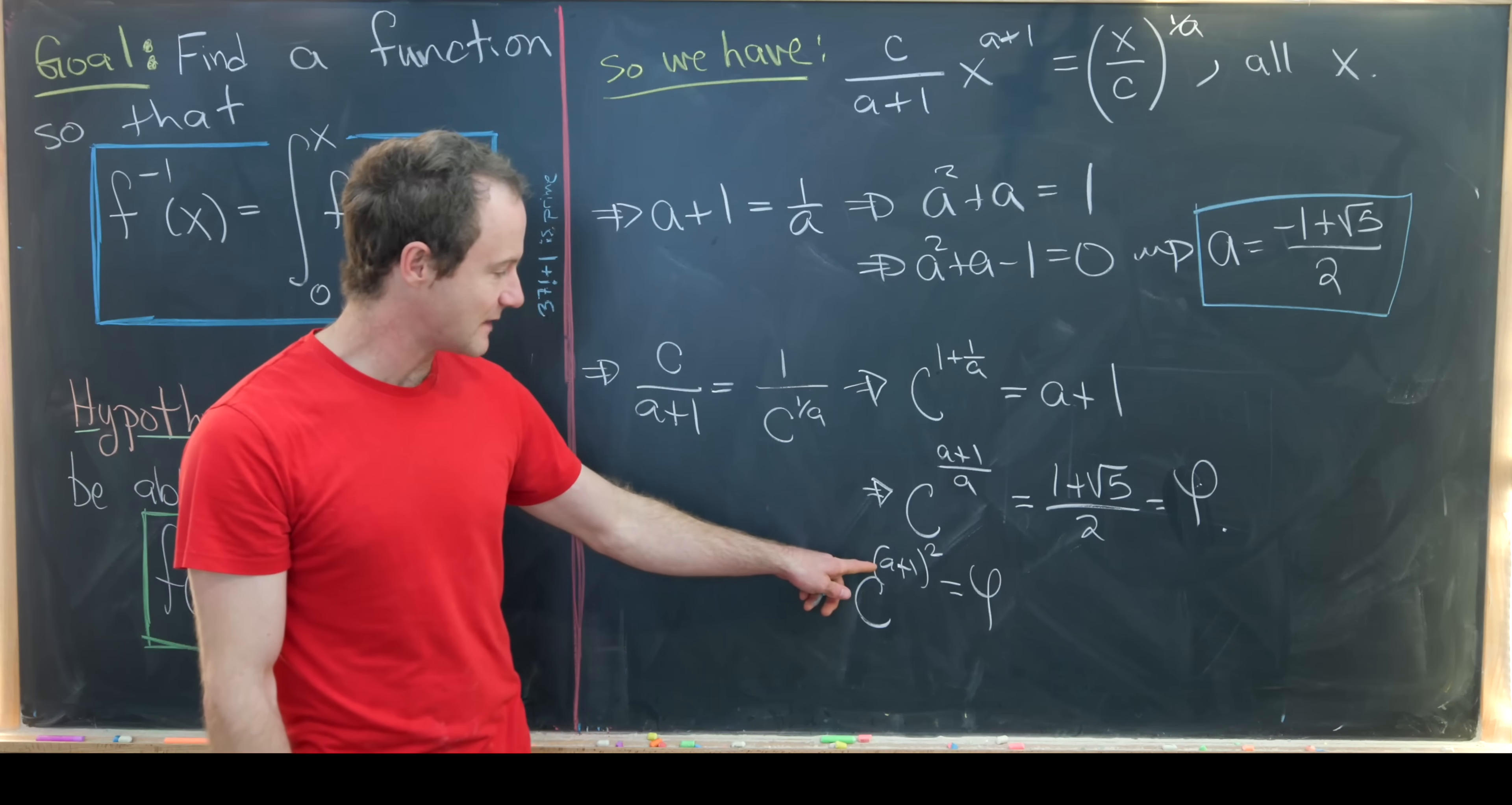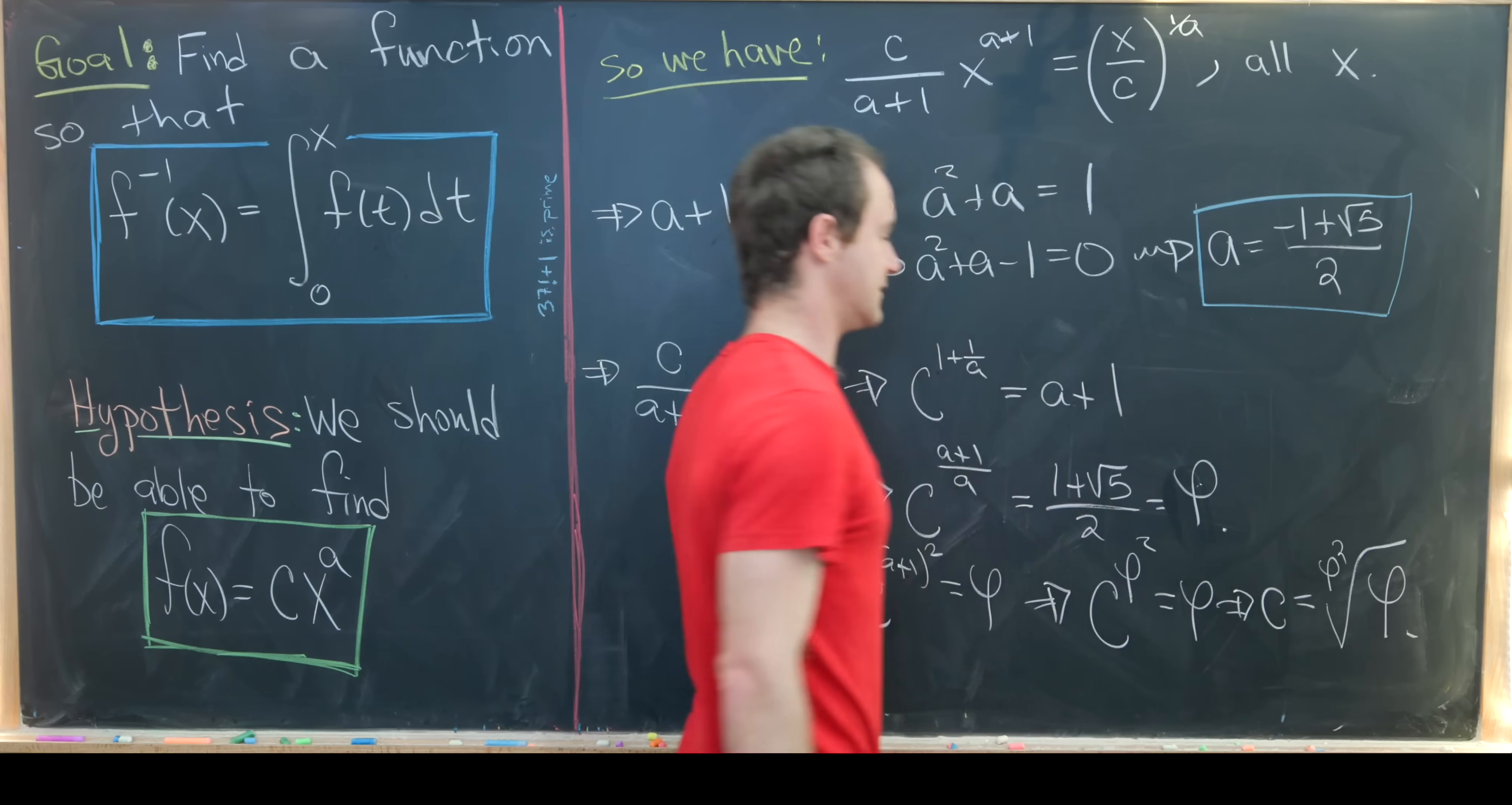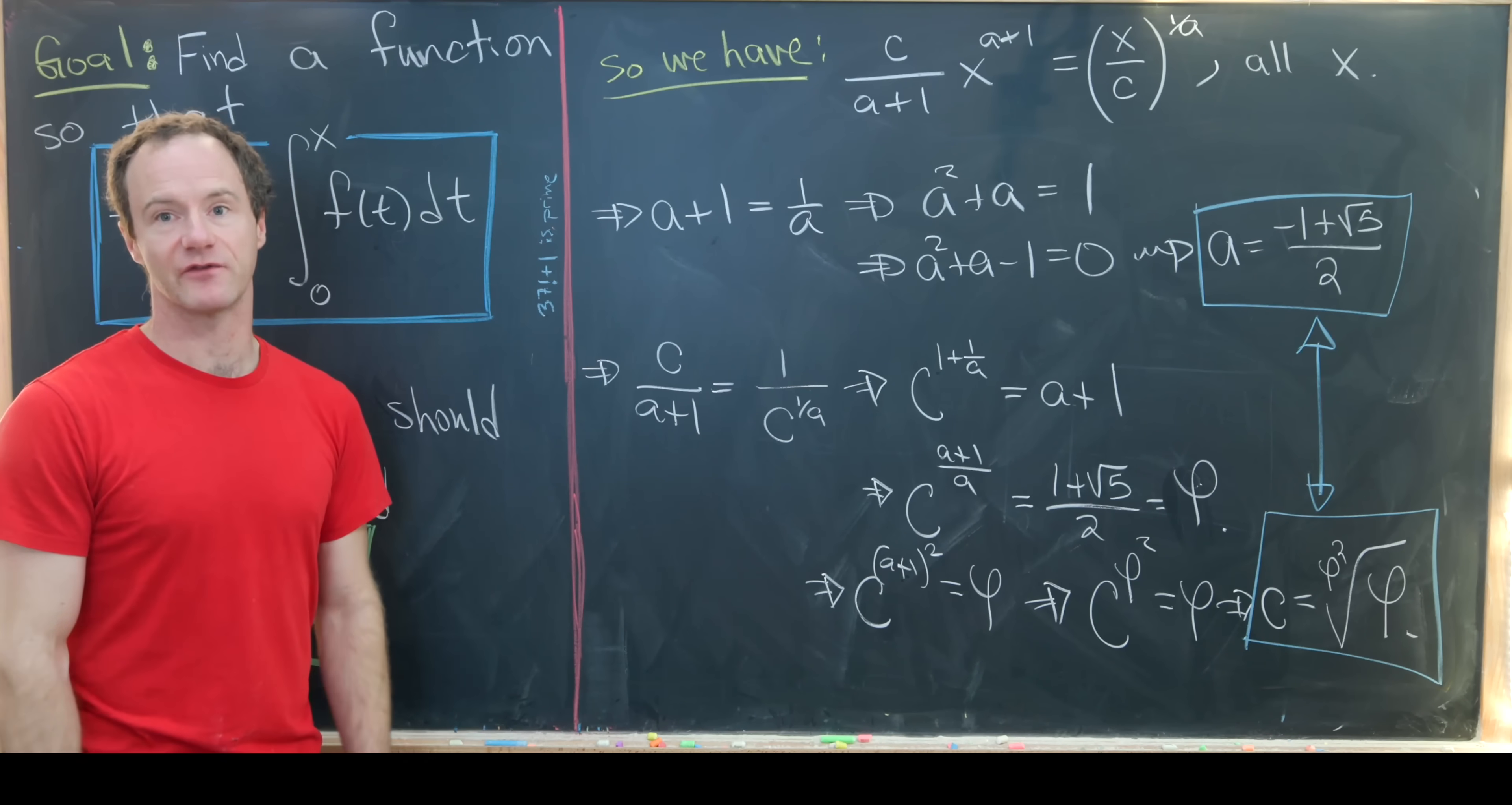Playing the same game where we noticed a+1 was the golden ratio phi, we see that c to the phi squared equals phi. In other words, c equals the phi squared root of phi. That's a pretty nice result. We've got a value of c and we have a value for a. Let's start the next board with our equation written down and check that everything works.